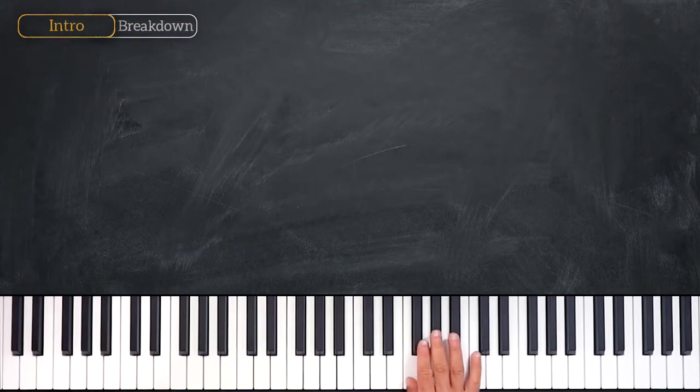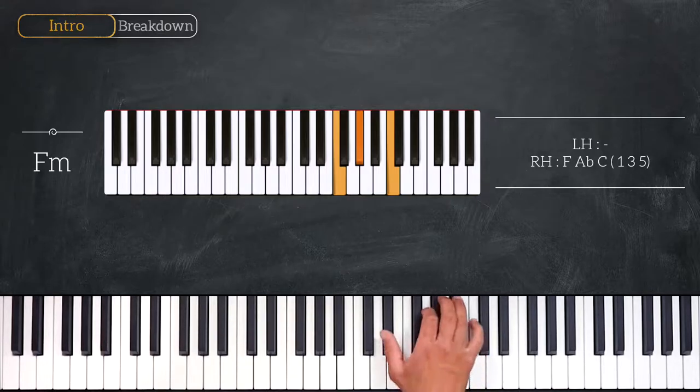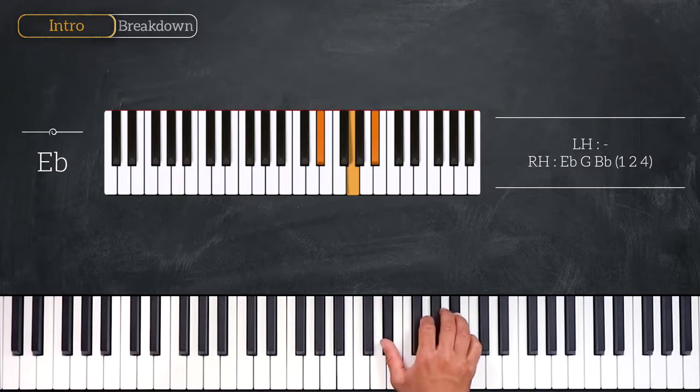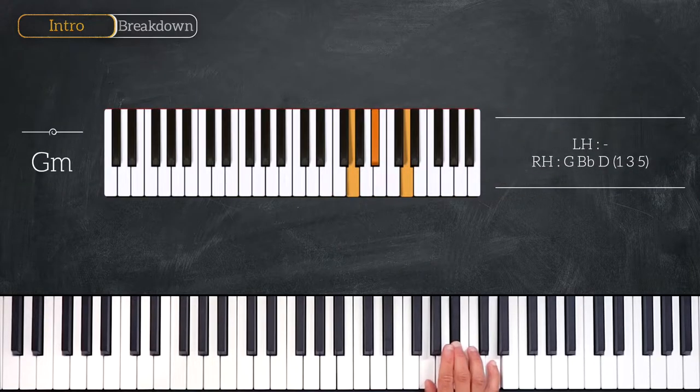We start on F minor playing F Ab C. Then we'll play an Eb chord playing Eb, G, Bb and we'll finish on this G minor playing G, Bb and D.